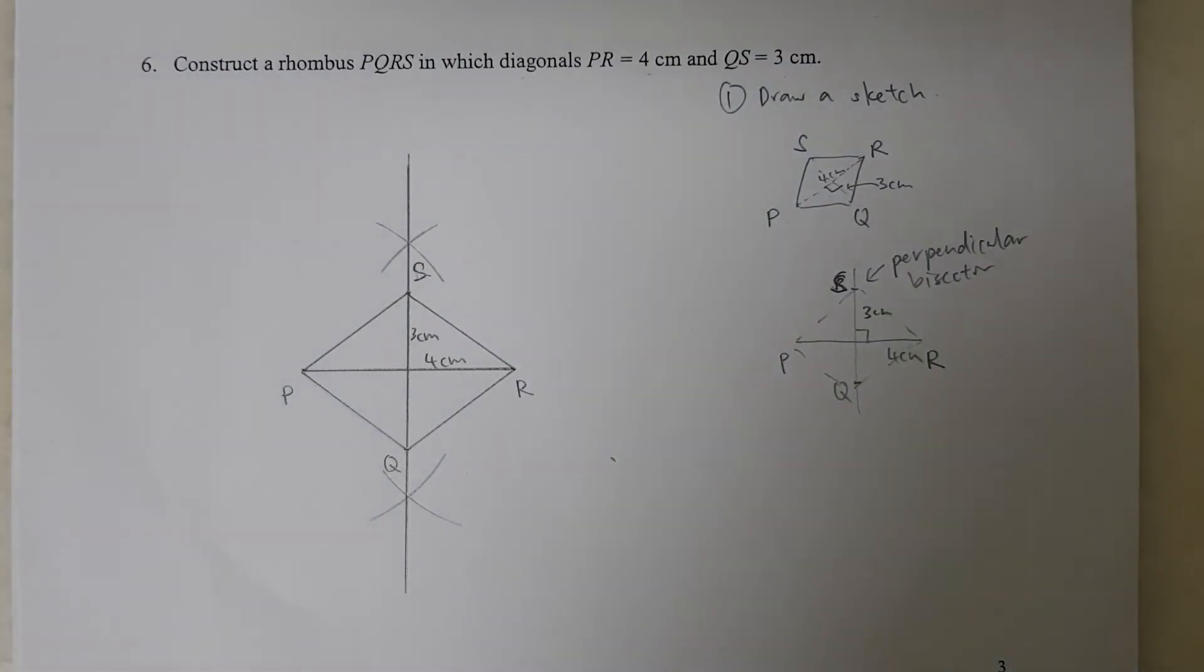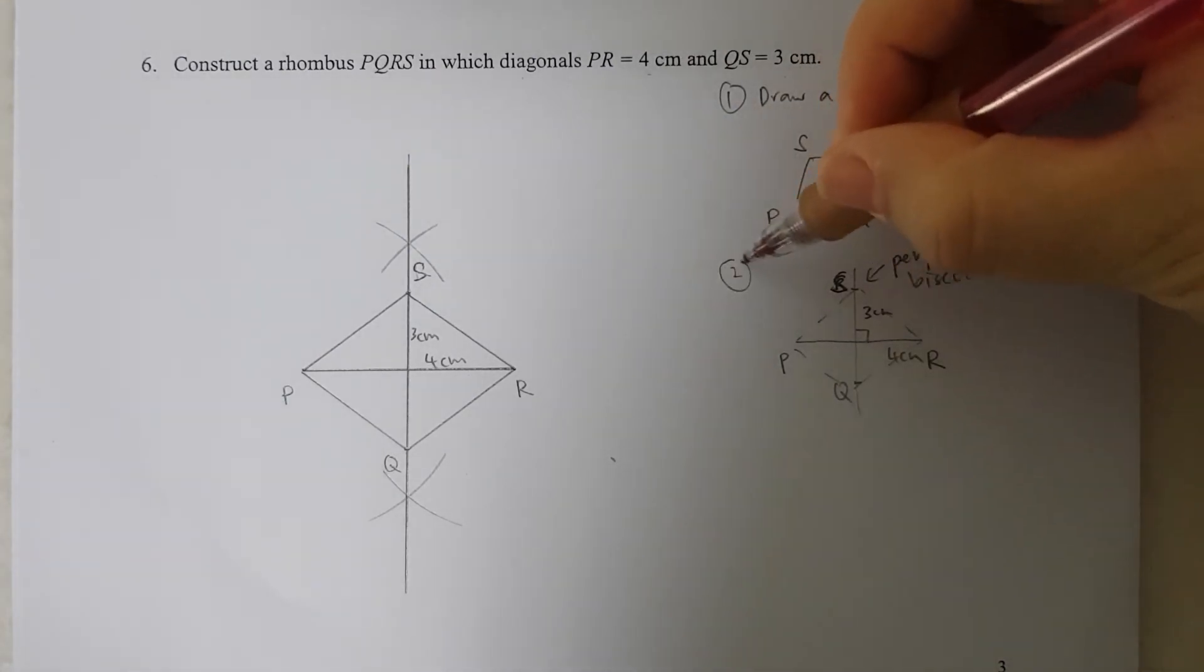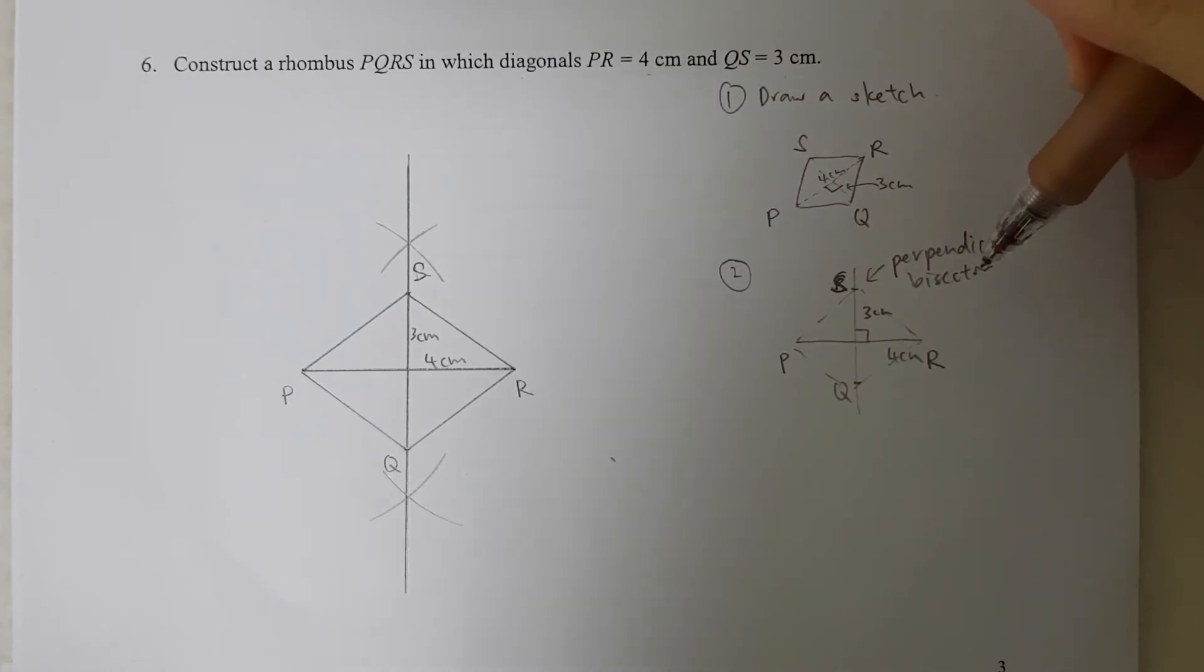A quick recap on how we have drawn this rhombus. The challenging part of this question is they've only given us the length of the diagonals. So after drawing the sketch, before I can actually start to draw my quadrilateral, I need to plan.